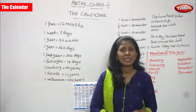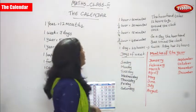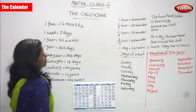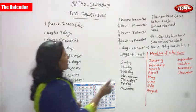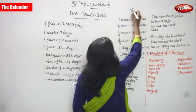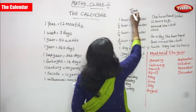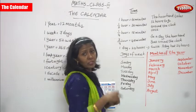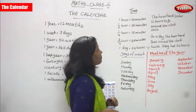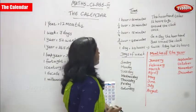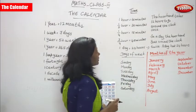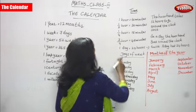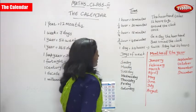Hi, welcome. In today's class we are going to see the calendar — that is the topic. In the last class we discussed about time. A small recap: one hour is equal to 60 minutes, half an hour is equal to 30 minutes, one quarter hour is equal to 15 minutes, and three-quarter hour is equal to 45 minutes.